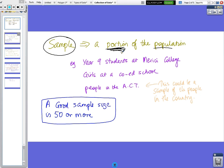So for instance, if the population was Marici College, then a portion might be the year nine students, or a portion might be girls as part of a co-ed school, or it might be people in the ACT when compared to the whole country. And what they say in the book is, a good sample size is around 50 or more.